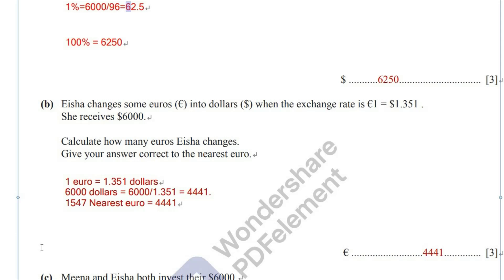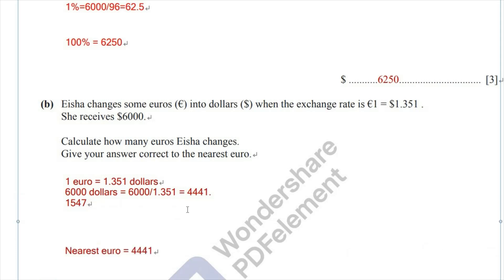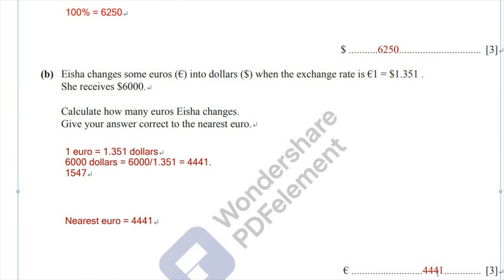In order to convert $6,000 to euros, you divide $6,000 by the exchange rate of euro to dollar. So that would be $6,000 divided by 1.351, which equals 4,441.157. But since it should be the nearest euro, the answer is 4,441 euros.